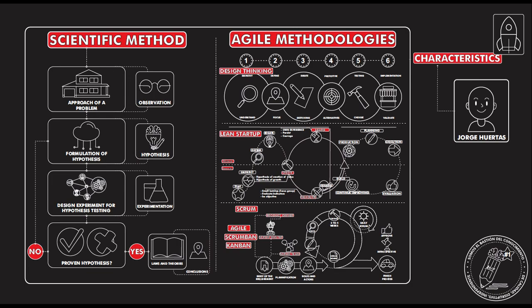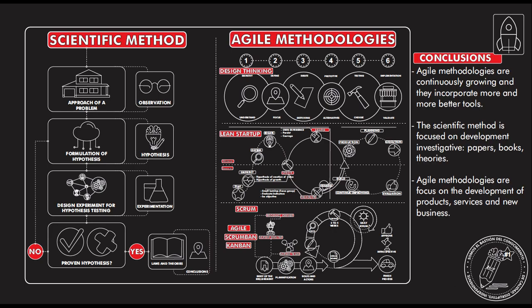Agile Methodologies have been in the market for less than 20 years, while the Scientific Method has been around for more than a hundred years and will probably stay. It's very important to understand which methodology suits the development you are making. As a conclusion, Agile Methodologies are continuously growing and incorporating better tools — they've gained new stages and new tools since they entered the market. The Scientific Method's structure hasn't changed in more than a hundred years and probably won't change. It is focused on research, investigation, papers, books, and theories.